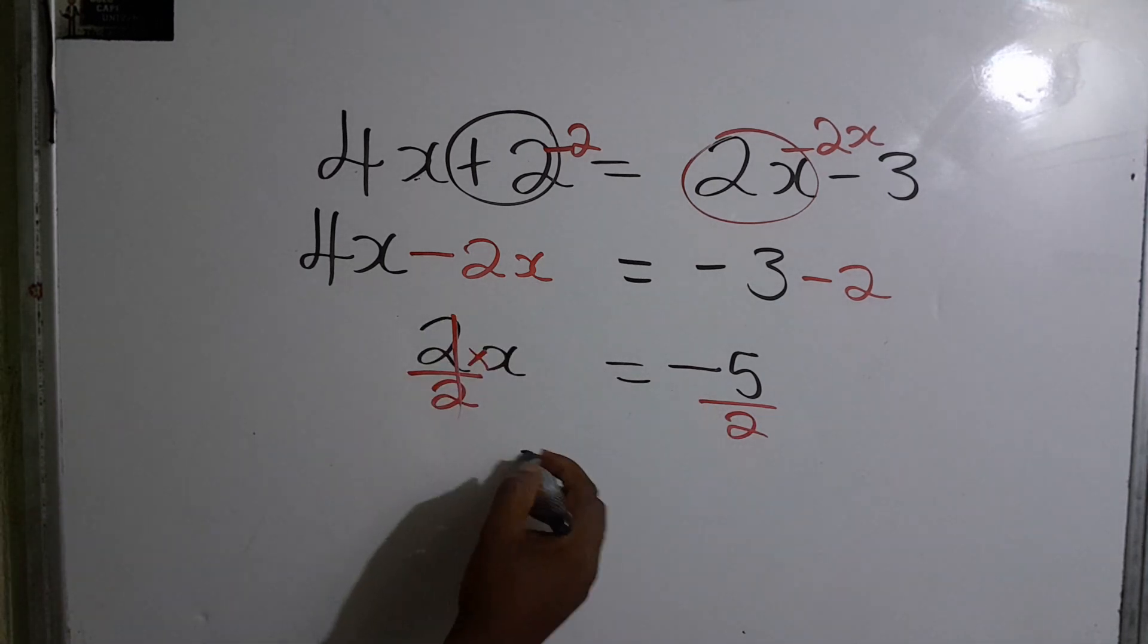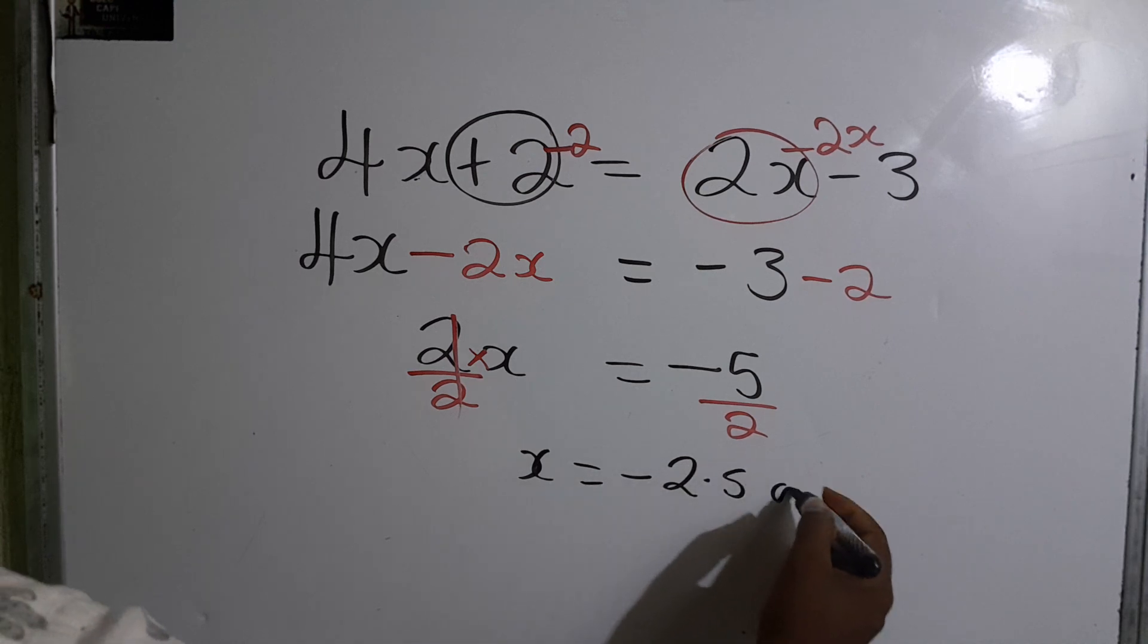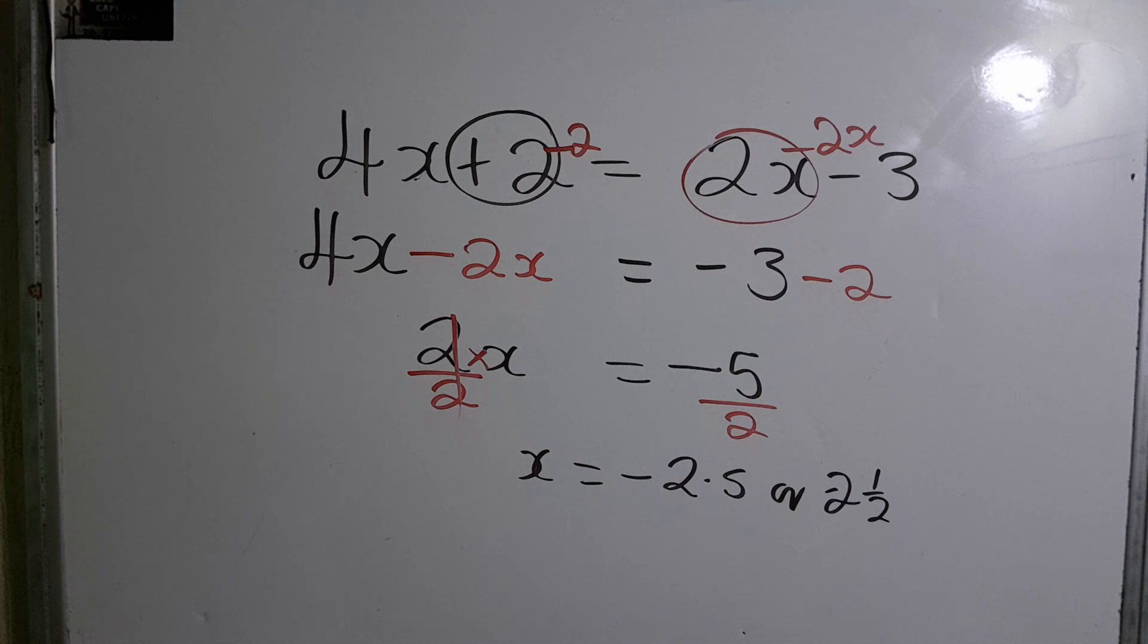So therefore, x is equal to negative 2 and a half, or if you like that, decimal 2.5.